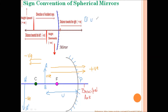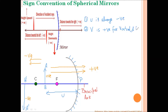From these rules we conclude: U (object distance) is always taken as negative because the object is always placed to the left of the mirror. Image distance V can be positive or negative depending on the nature of the image. V is taken positive for a virtual and erect image, because virtual and erect images are always formed to the right of the mirror. V is taken negative for a real and inverted image, because real inverted images are always formed to the left of the mirror, as shown in the diagram.